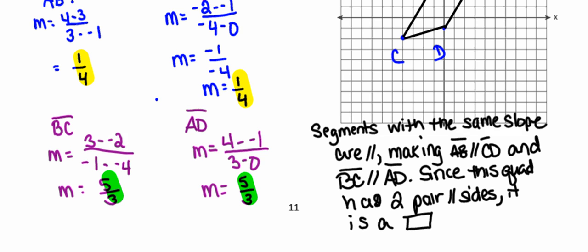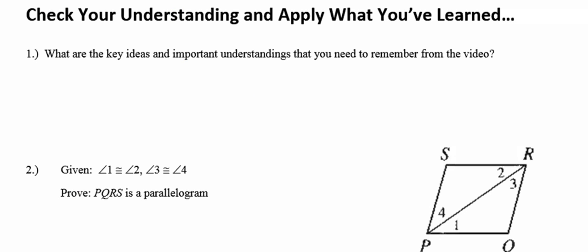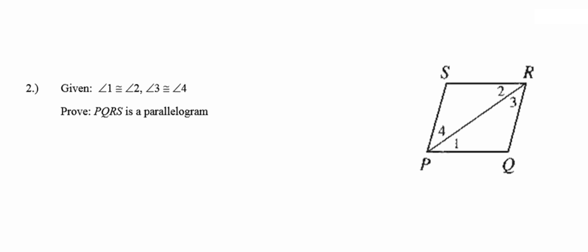That should give you a good start on writing some parallelogram proofs. I want you to, at the top of the next page, identify the key ideas and summarize what's important from the video you just watched. Then see if you can apply what you just learned in order to prove that quadrilateral PQRS is a parallelogram in number 2.